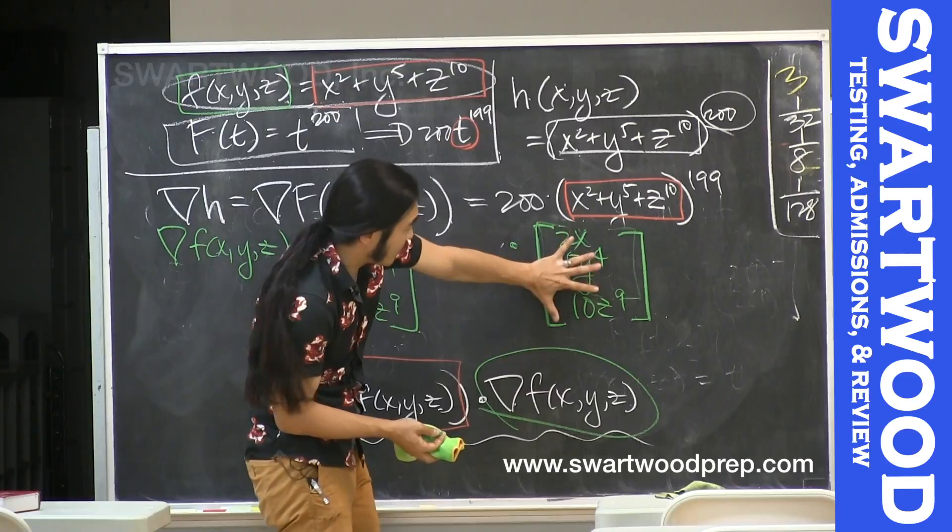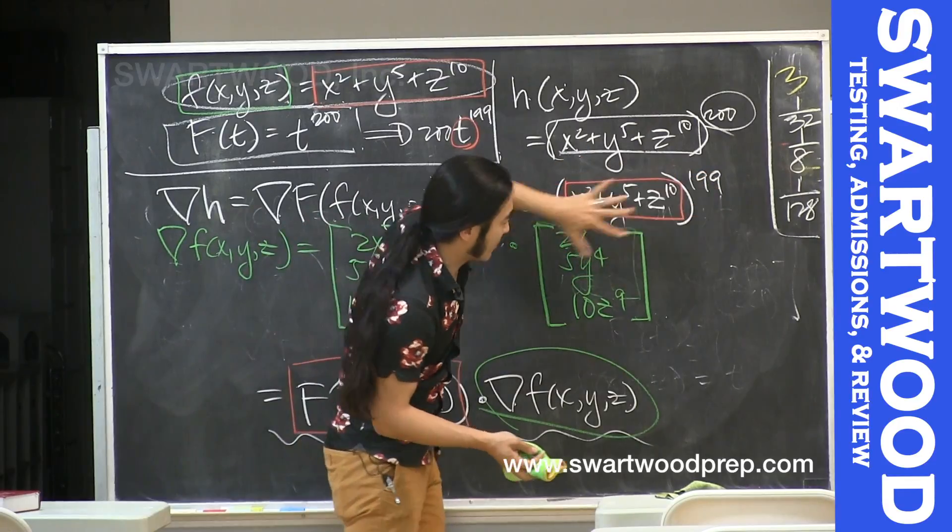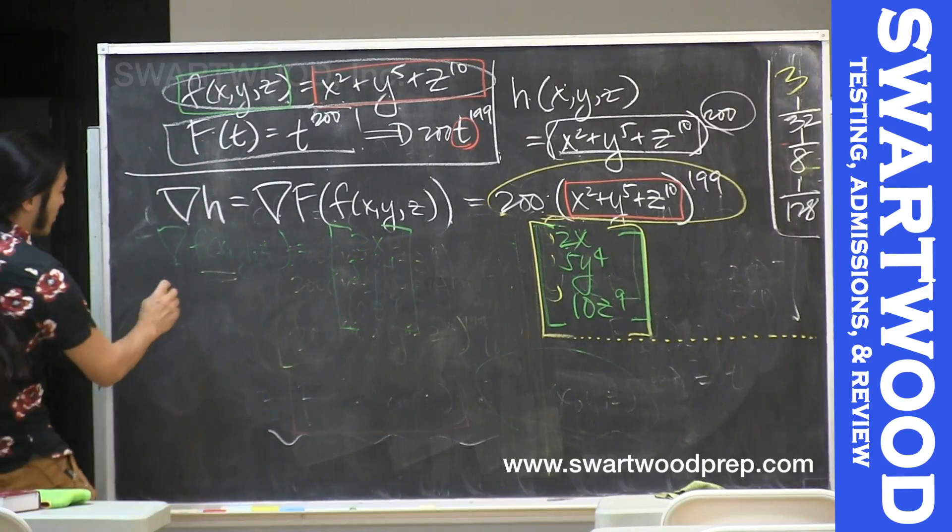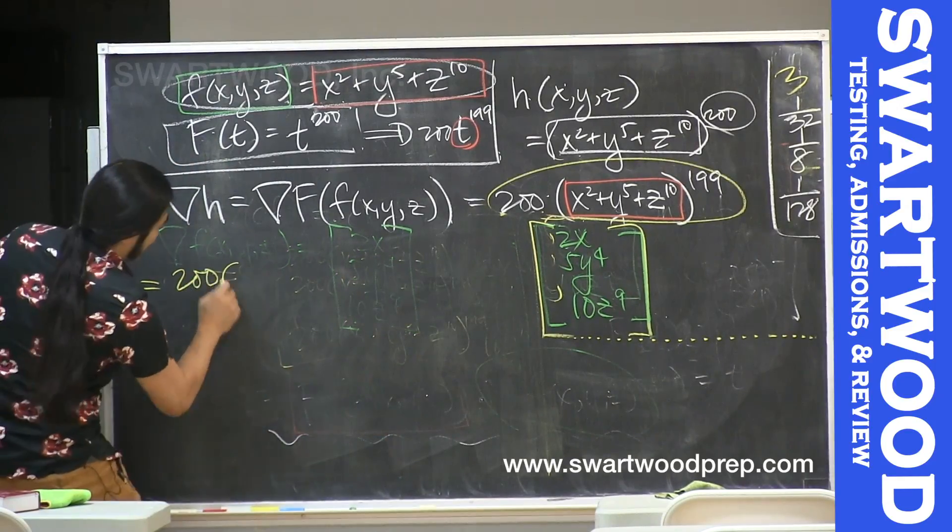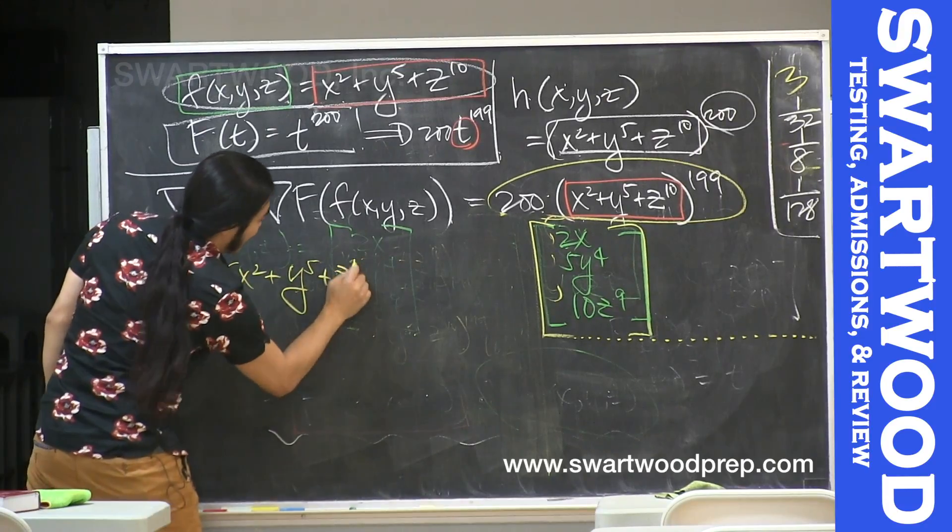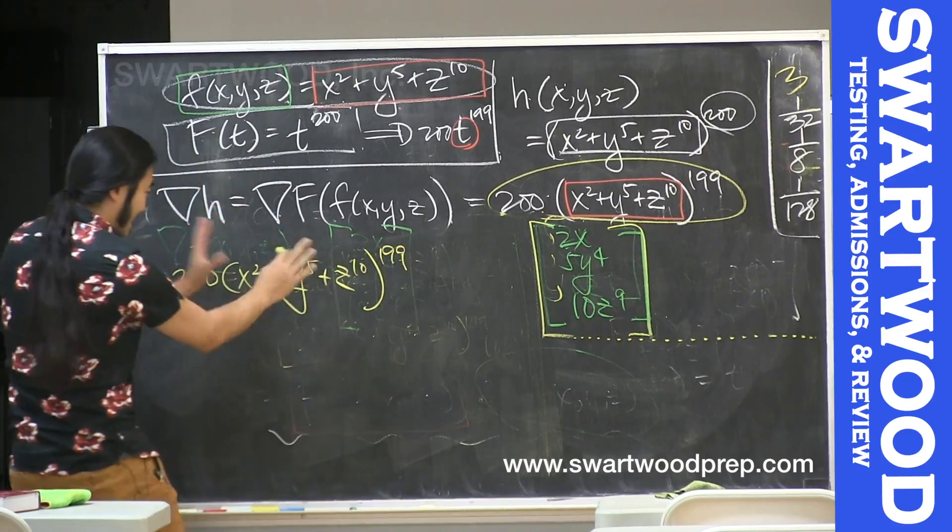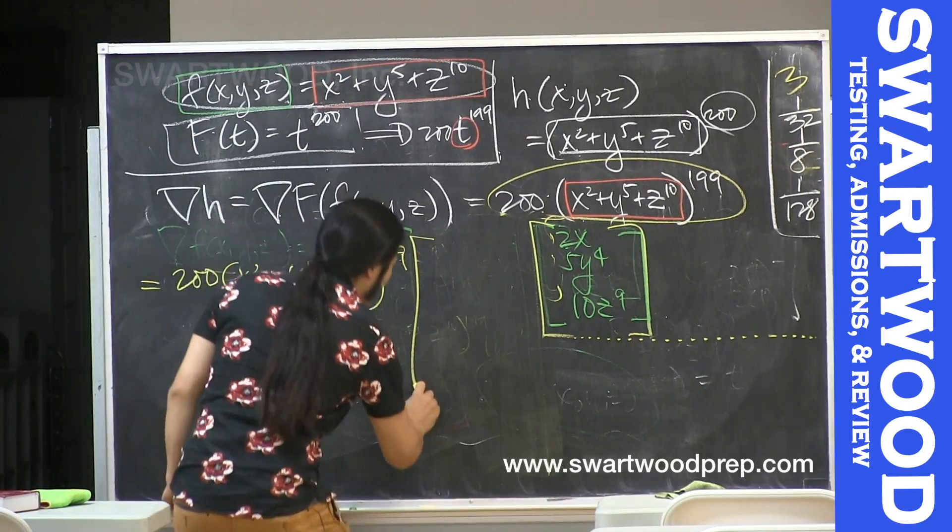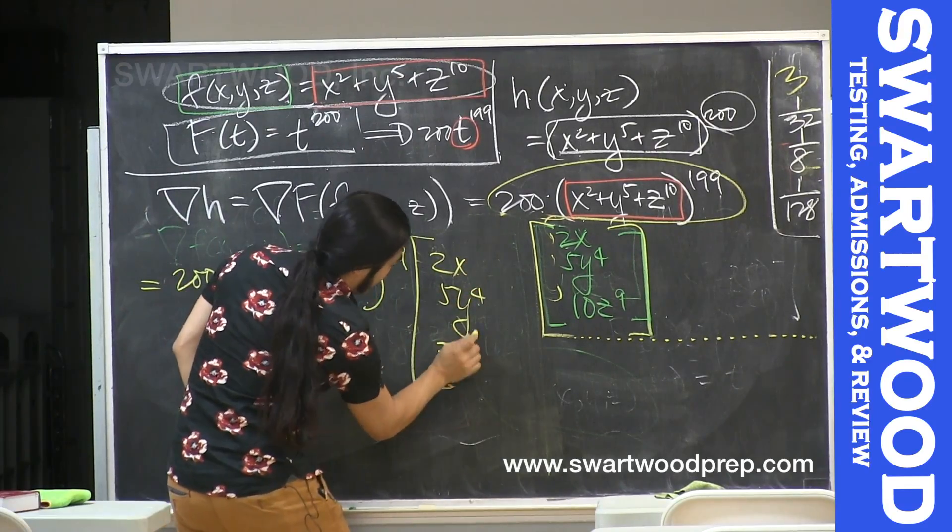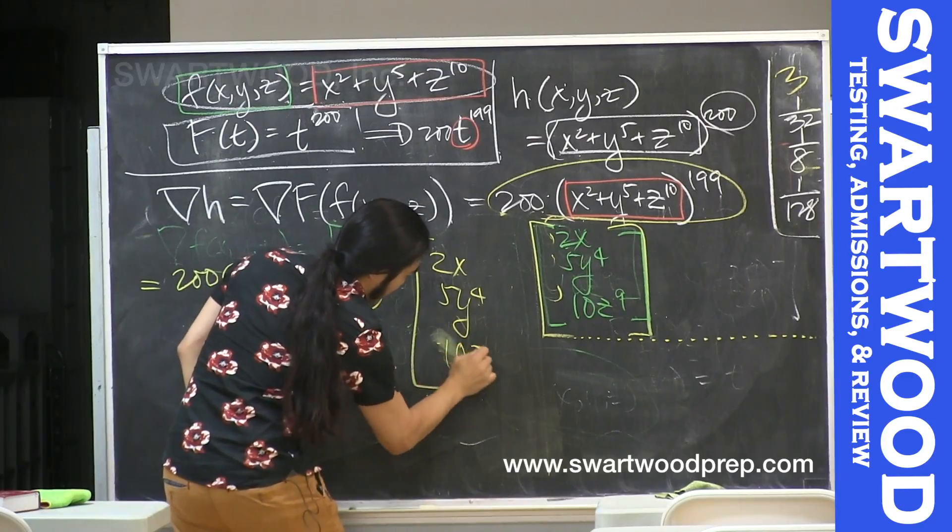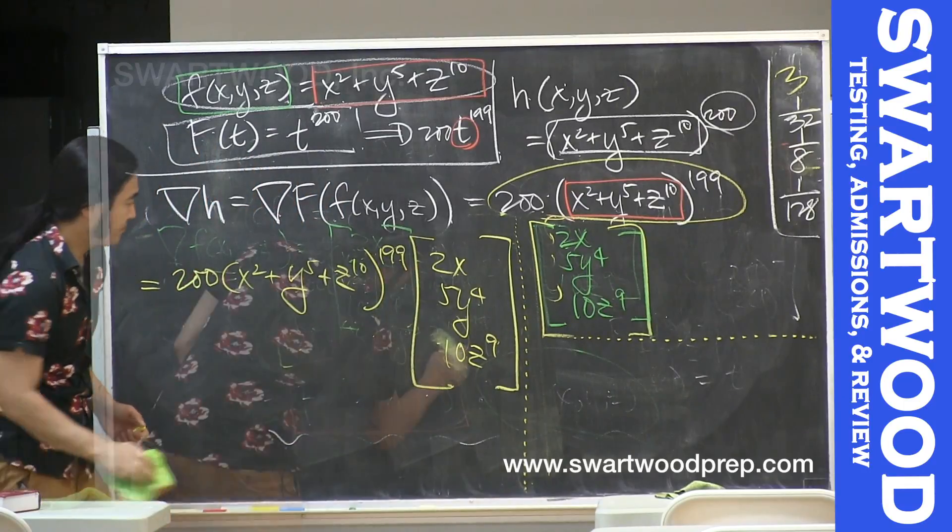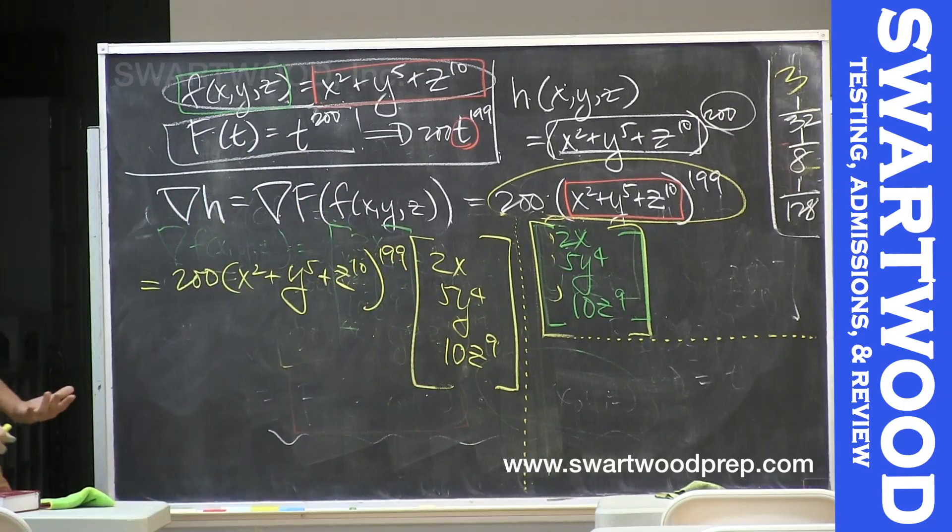So now we just put it in here. We've got our vector, and it's being multiplied by this scalar. And I guess if you wanted to, you could slap it all together, but that kind of looks like a pain. So just to make this a little bit clearer, the final answer is going to be 200 times (x squared plus y to the 5th plus z to the 10th) raised to the 199th power as a scalar, times each component here. There we go. So not too bad, right?